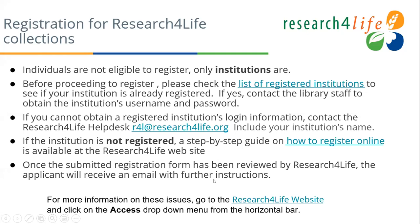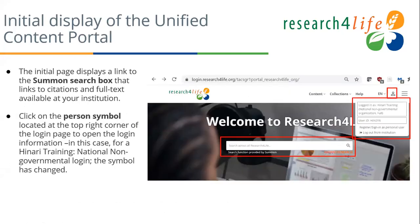After reviewing the registration guide, fill in the registration form and submit it. It will be delivered to the Research for Life portal team, who will review your request, and you will receive an email with further information. The Research for Life portal displays a Summon search box that links to citations and full text available in your country. Simply type your query and click the magnifying glass to retrieve results related to your query.